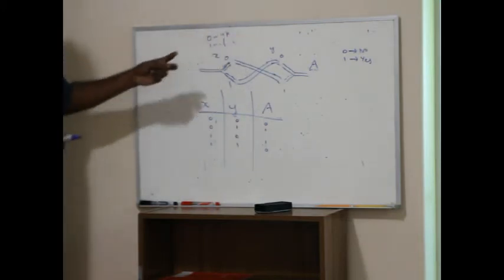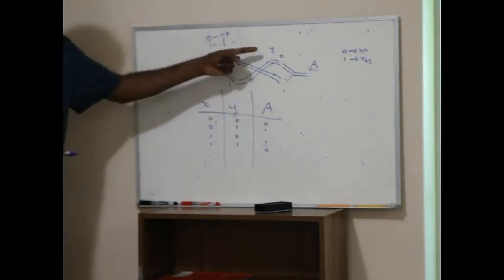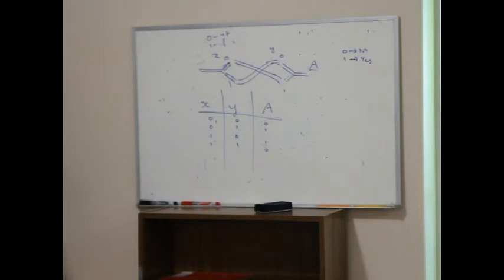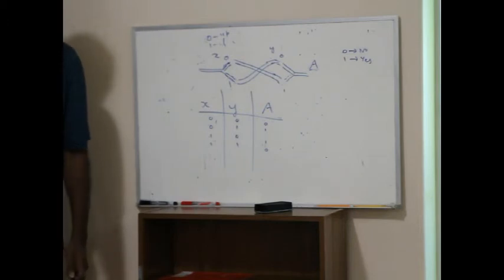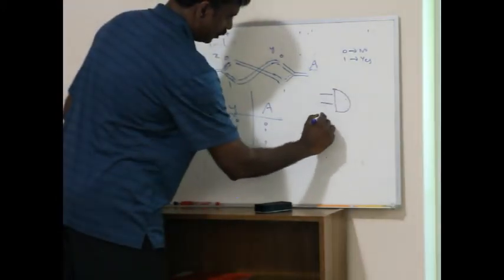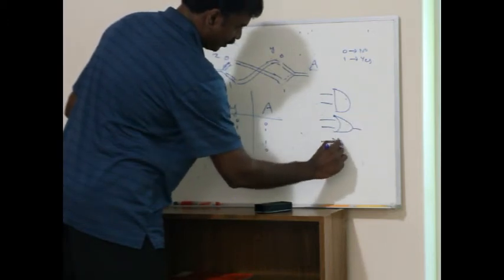If both are up, there is no way the water can flow. If this is 0 and this is 1, or if this is 1 and this is 0, then water can flow. If both are 1, water cannot flow. So what kind of gate is this? This is called an exclusive OR gate — meaning either X or Y can be 1, but not both. Both X and Y have to be different.